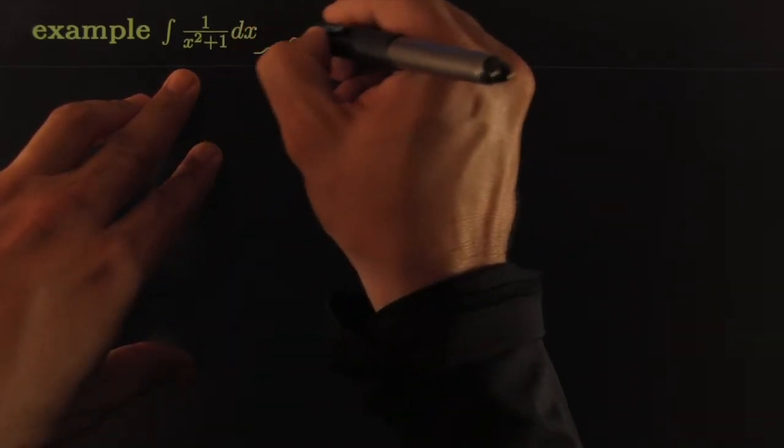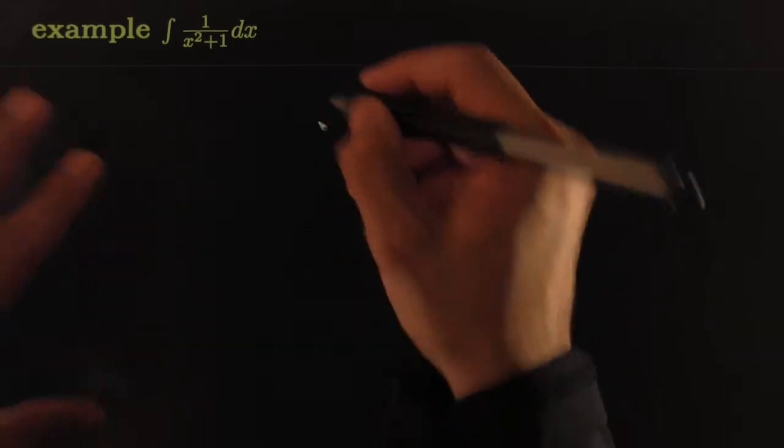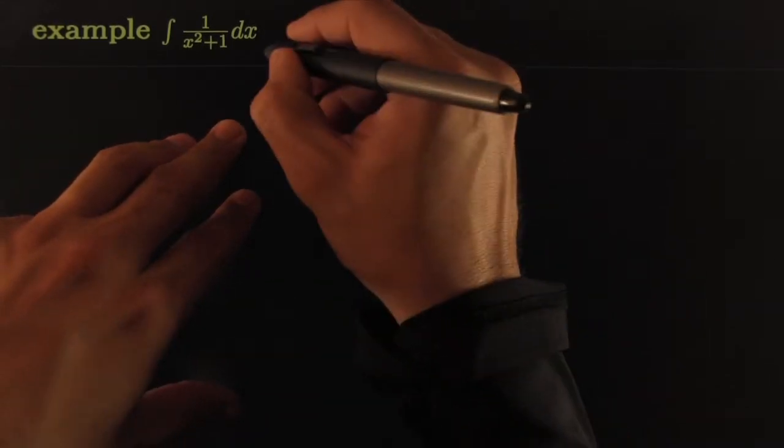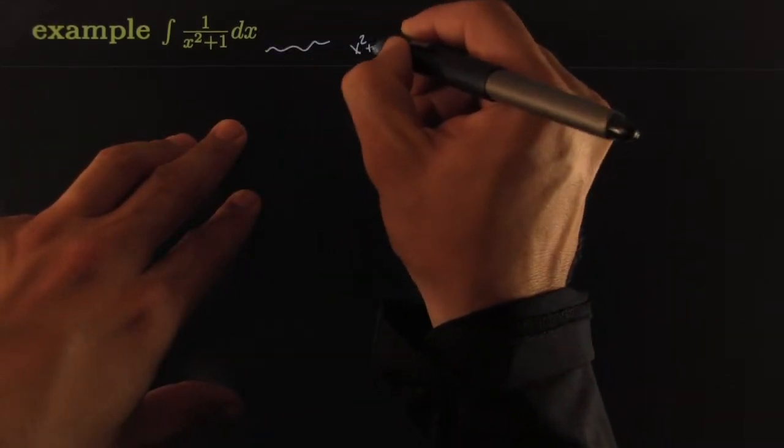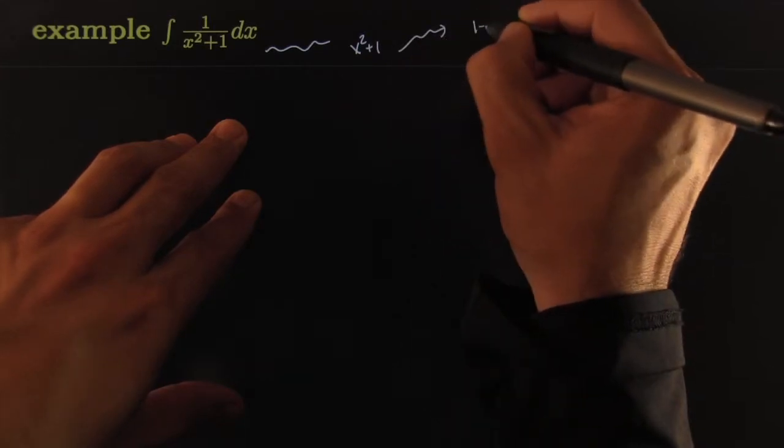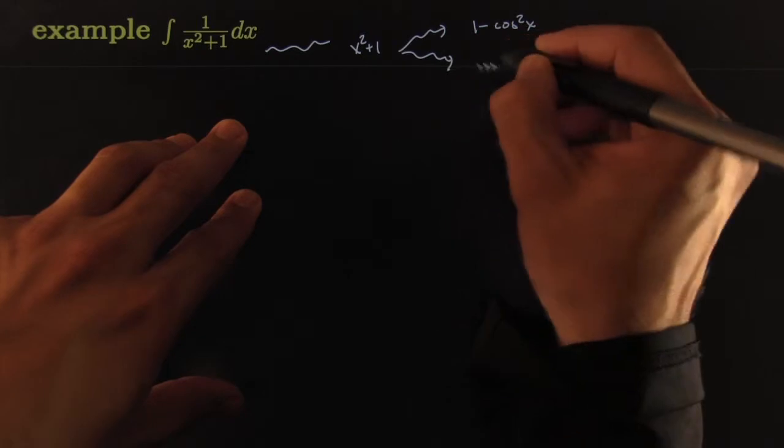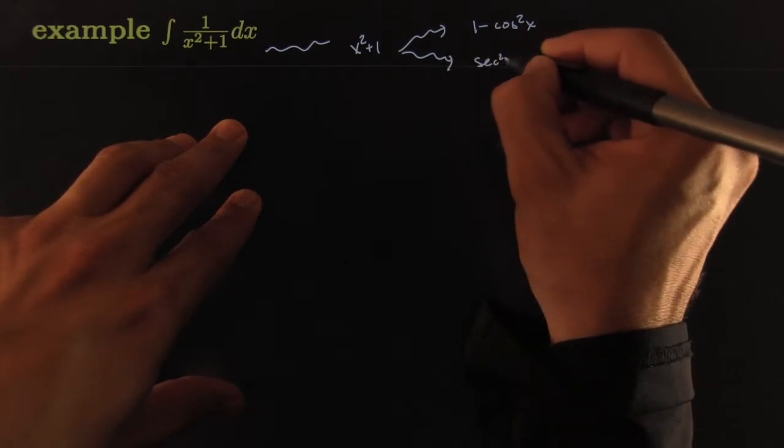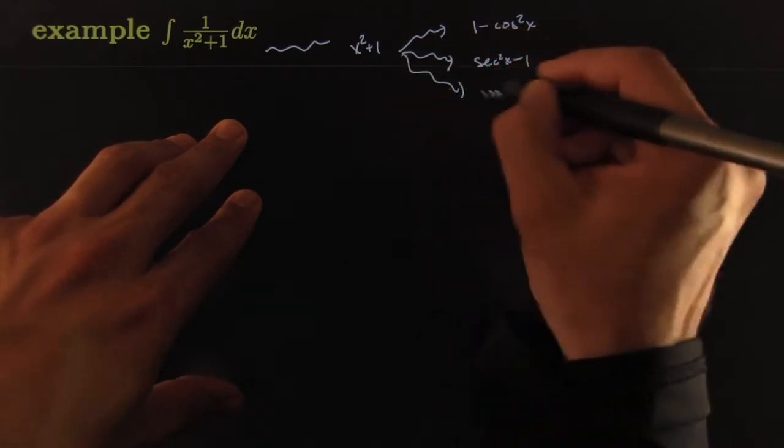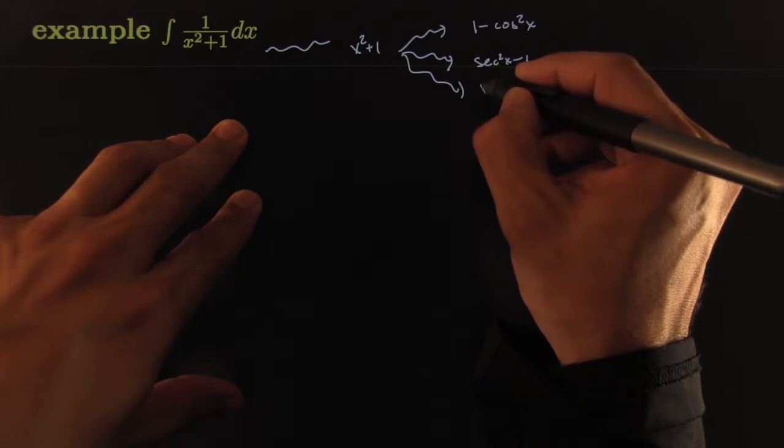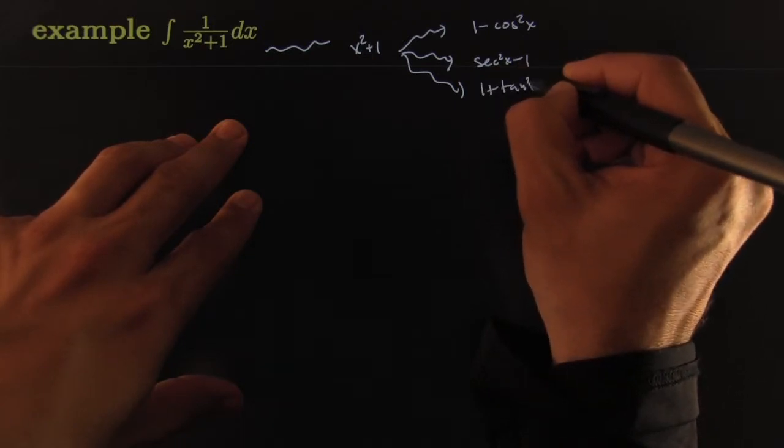Does x squared plus 1 most resemble 1 minus cosine squared of x? Or does it most resemble secant squared of x minus 1? Or does it most resemble 1 plus tangent squared of x?